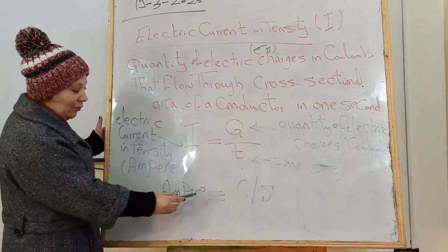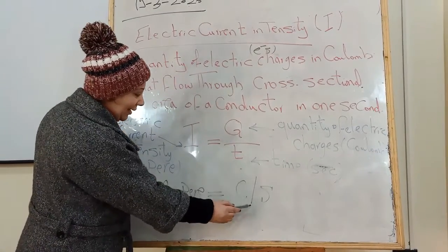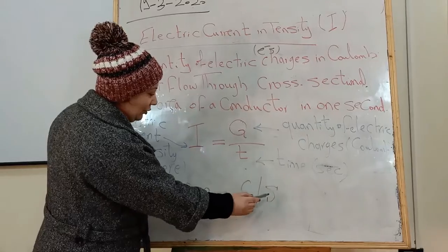So ampere is equivalent to coulomb per second.